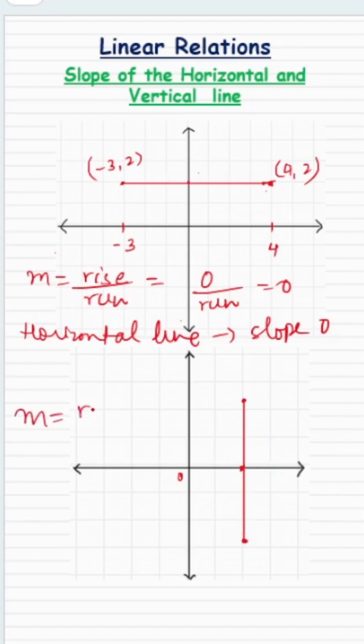So the slope m, which is rise over run, there will be some rise, positive or negative depending on whether y is increasing or decreasing, but run is 0.